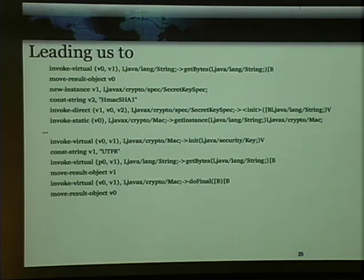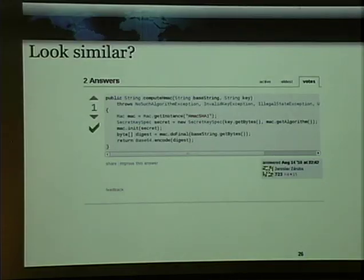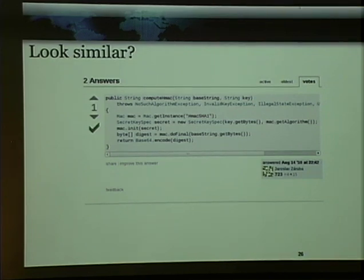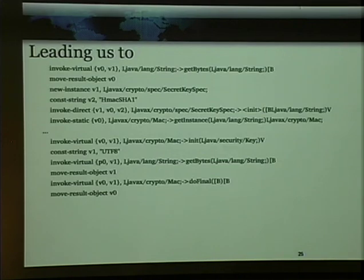I'm not a Java guy, I'm not an enterprise guy at all. So I did a search to figure out how people are doing this in Java. And thankfully, the person who wrote the Twasebook API did the same search. Because if you look at this and see how they match up — you get an instance, you got a secret key spec — you're seeing a lot of commonality there. So that allows us to do a little off-to-the-side prototyping and figure out exactly what's happening with our app, how it's signing things. We know the second parameter passed in is going to be the key.